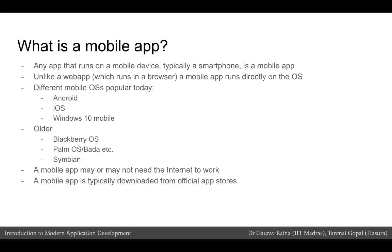A mobile app may not actually need to connect to the internet to work. For example, games are also mobile apps and they might not need to connect to the internet to allow the user to play the game. Unlike a web app which is used by going to a particular website or a domain name, a mobile app is typically downloaded from official app stores.